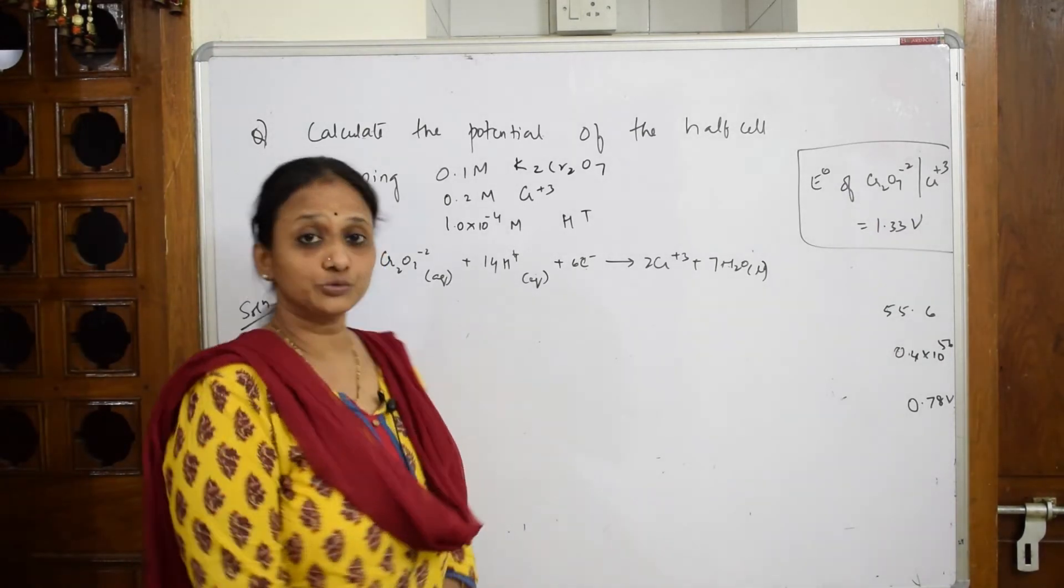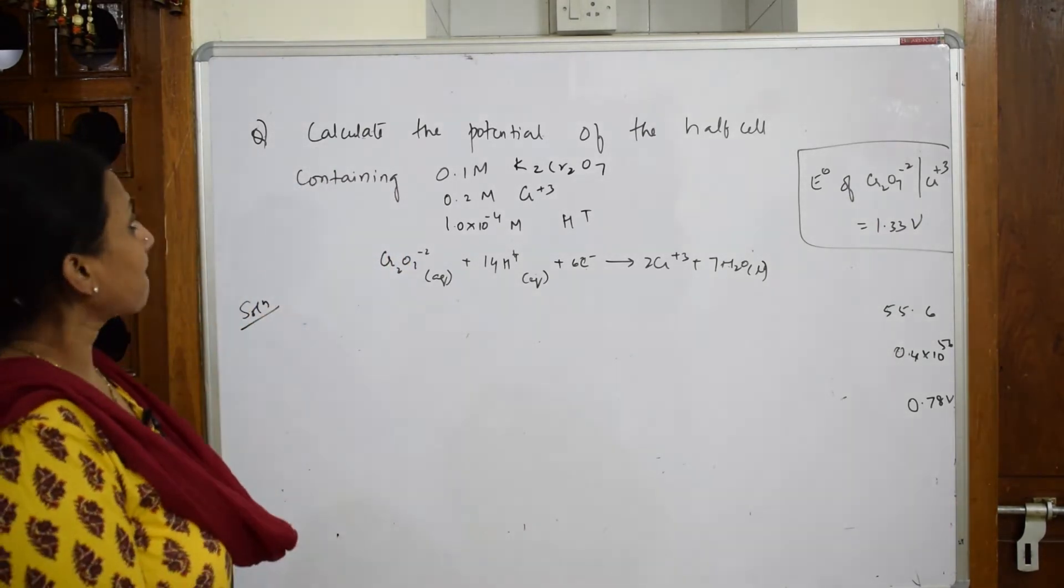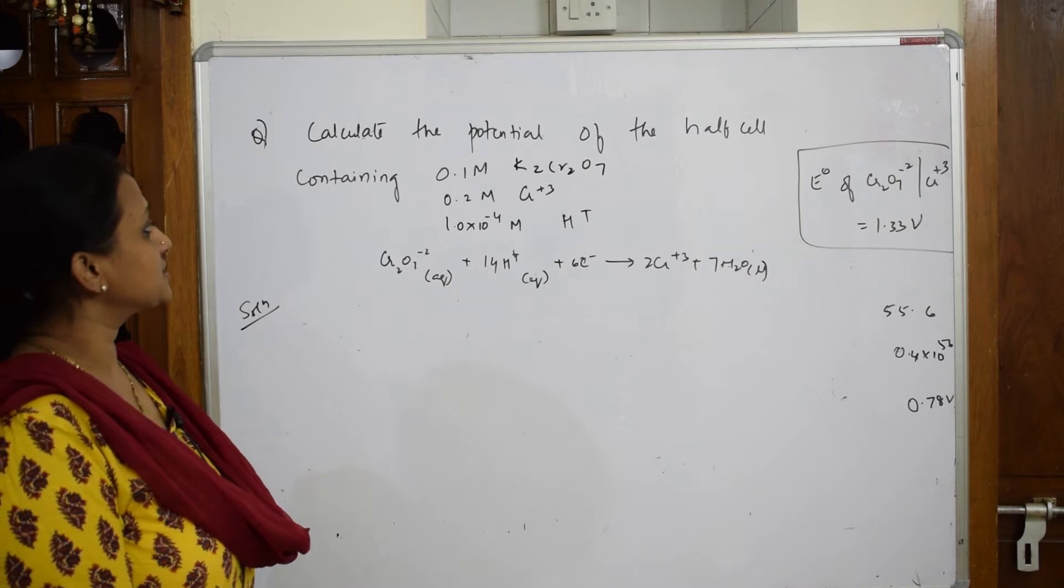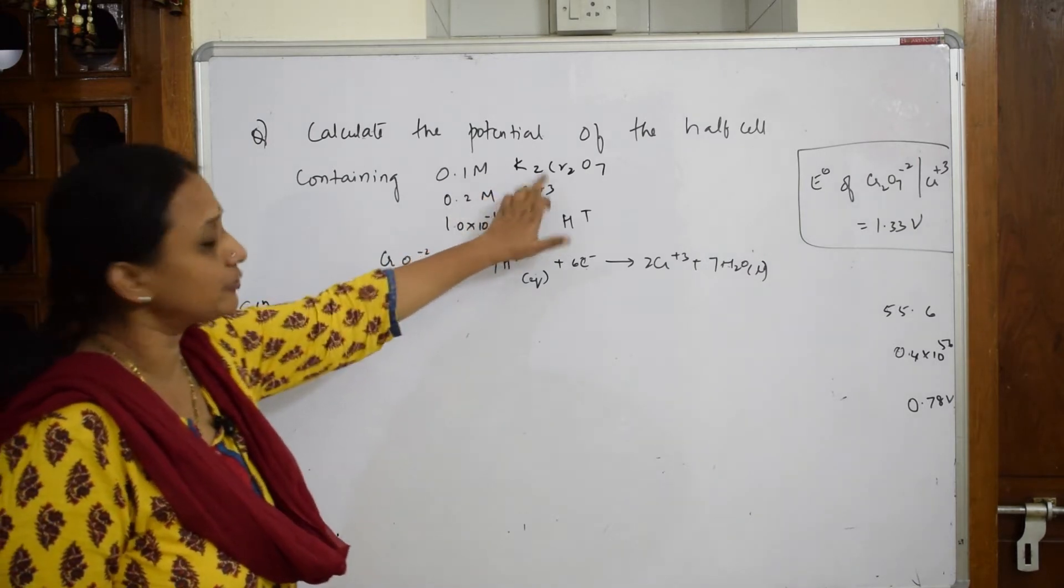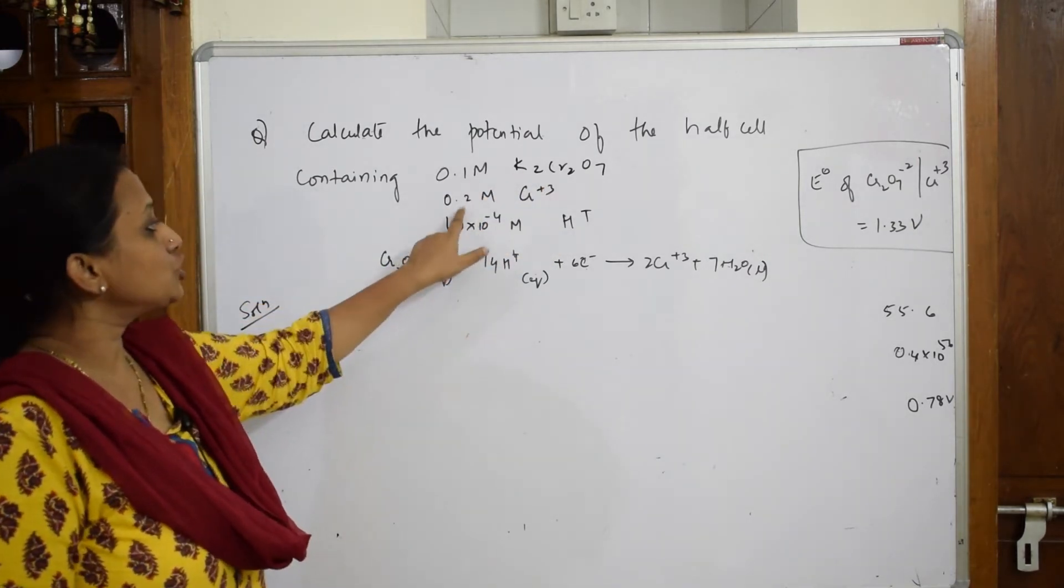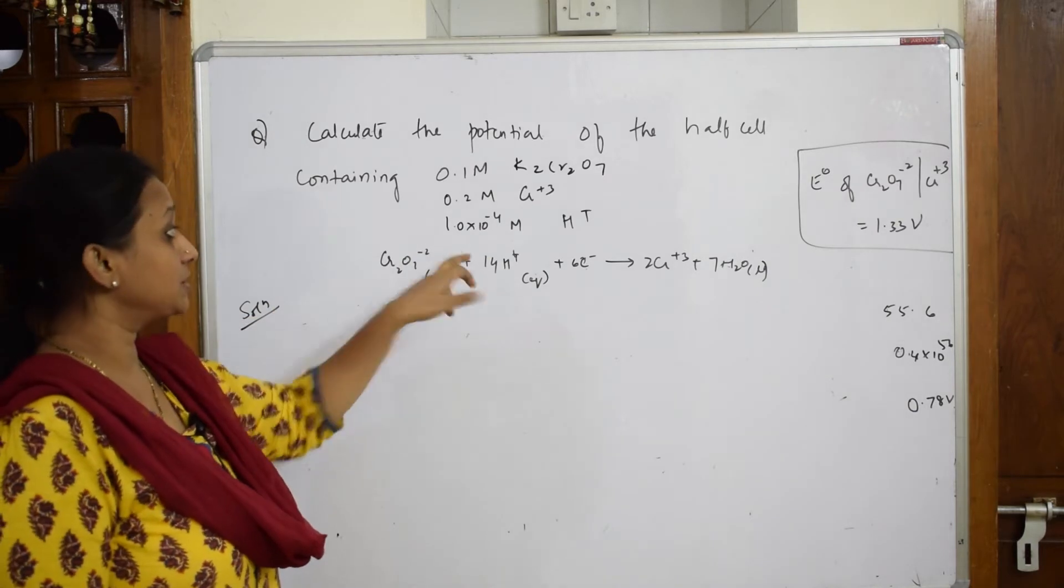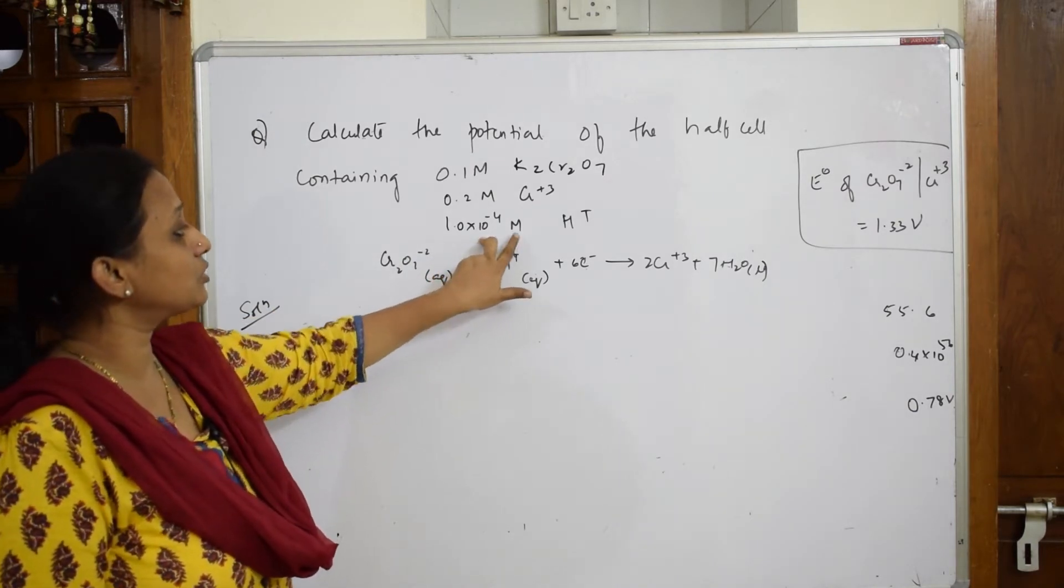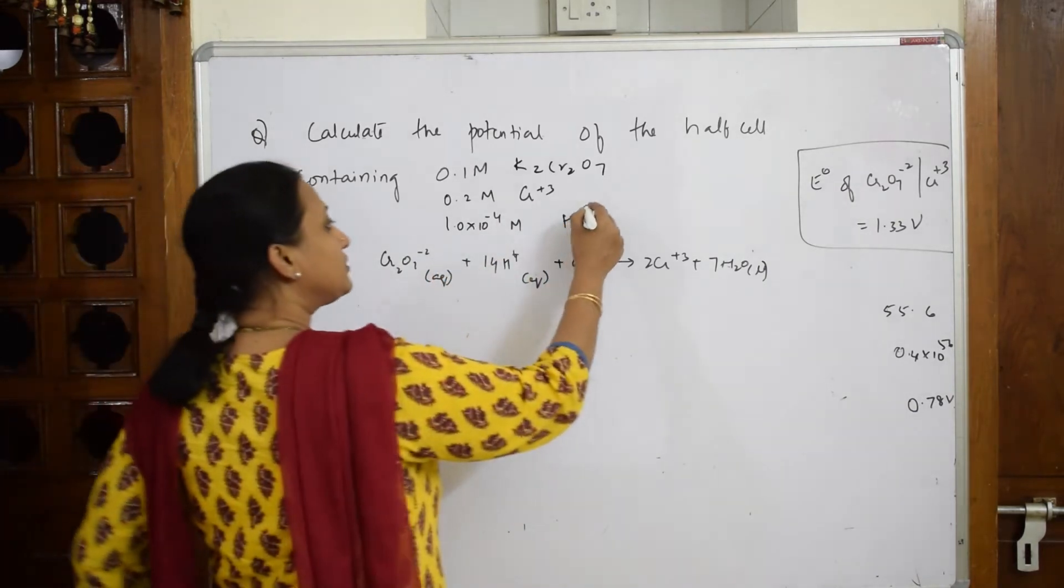Now let's come back and solve this numerical. What do they give us? Calculate the potential of the half cell containing 0.1 molar potassium dichromate, 0.2 molar Cr^3+, and 1×10^-4 molar H+. And they've given us one reaction.